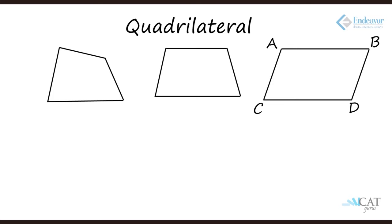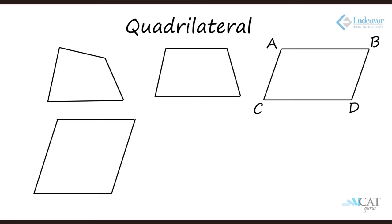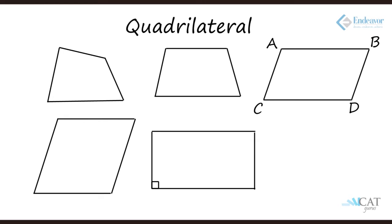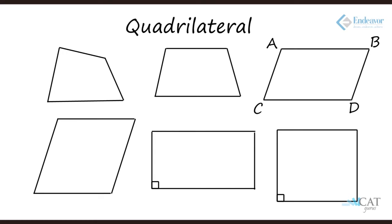Refining further, there are two options. Either we make all sides equal while keeping opposite sides parallel — this gives a rhombus. Or, we make all angles equal instead. Equal angles must each be 90 degrees, and with opposite sides parallel and equal, this gives a rectangle. Finally, if we make all sides equal in a rectangle, or make all angles equal in a rhombus, both result in a square — a regular quadrilateral with all sides equal, all angles equal, and opposite sides parallel.